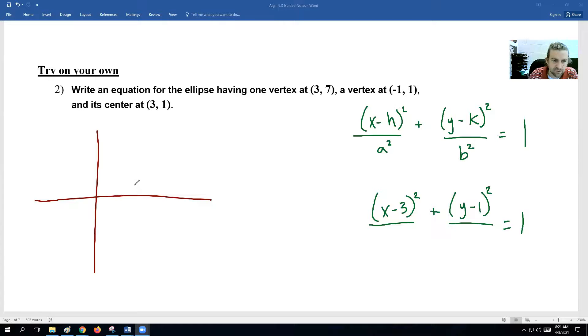So we have a point at (3, 1), over 3 up 1. Here's the center. Our vertex is at (3, 7), so over 3 up 7. That is 6 units away. So it means our other vertices would be 6 units away. So it would be over at (3, -5). And then the other vertex is at (-1, 1). So it would be over here at (-1, 1).